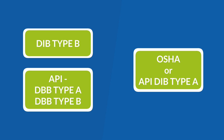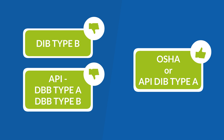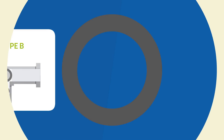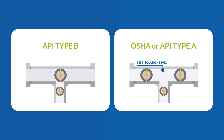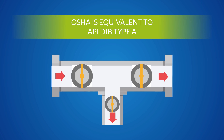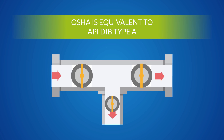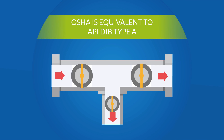Important to know is that the API's DBB type A and type B definition, or even the DIB type B definition, does not achieve the same level of isolation as OSHA's. API type B defines a DBB or DIB valve as one single valve with two seats, while the OSHA standard and API type A can only be achieved with two separate valves with a method to bleed pressure in between. Through this, the isolation level is increased enormously. To sum up, OSHA is equivalent to API DIB type A.